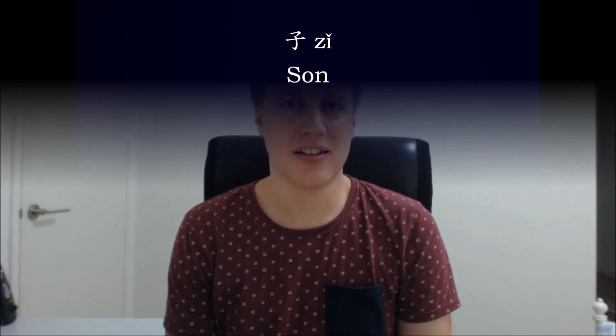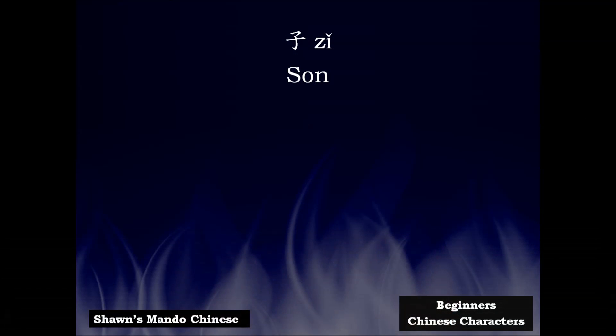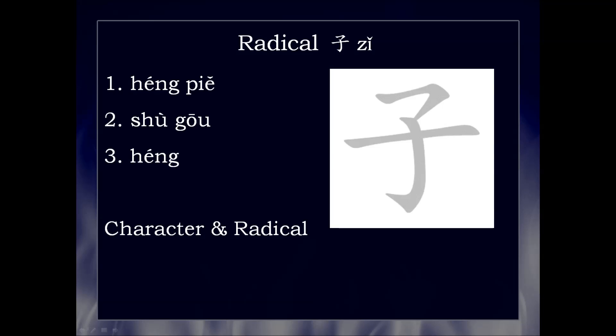Hi everyone, this video is about the basic Chinese character and radical 子, which means 'son.' Here's how to write this radical.